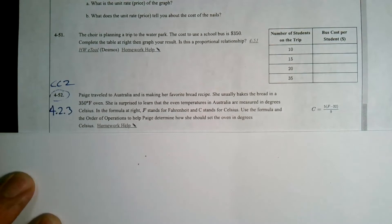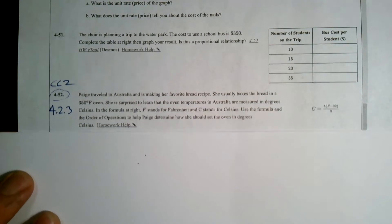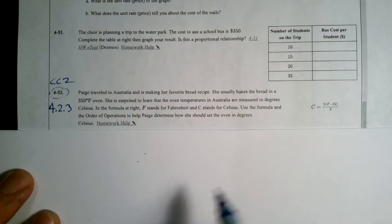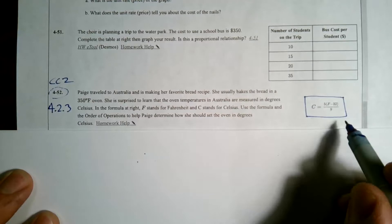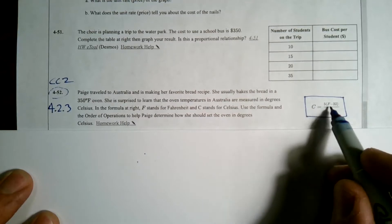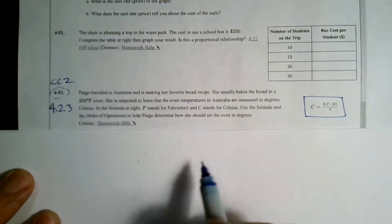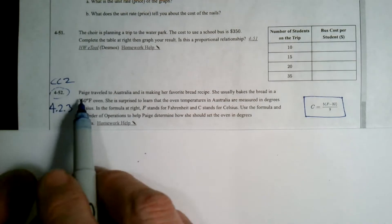Number 4-52. So the topic is using order of operations, but specifically from a given formula and finding Celsius when given Fahrenheit. So I'll read the problem and we'll go from there.